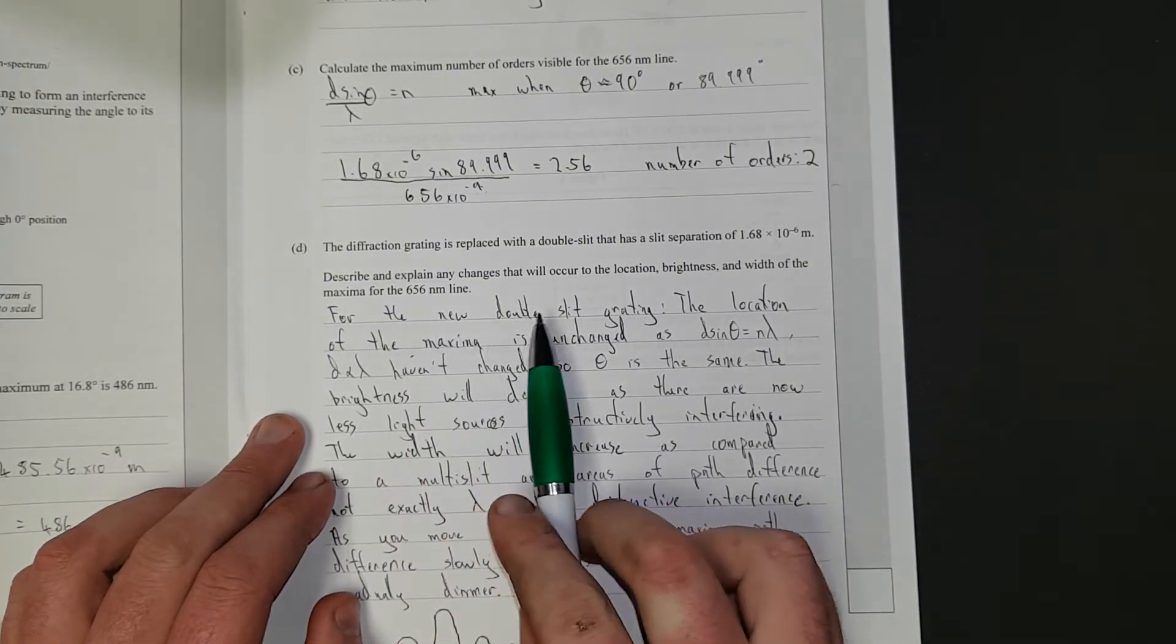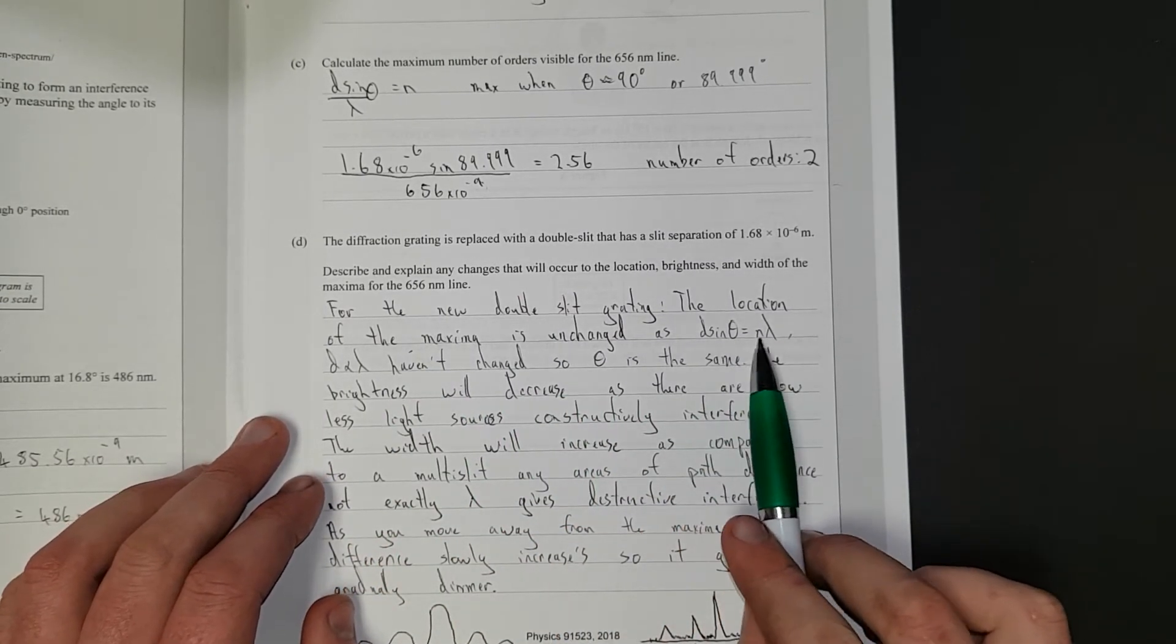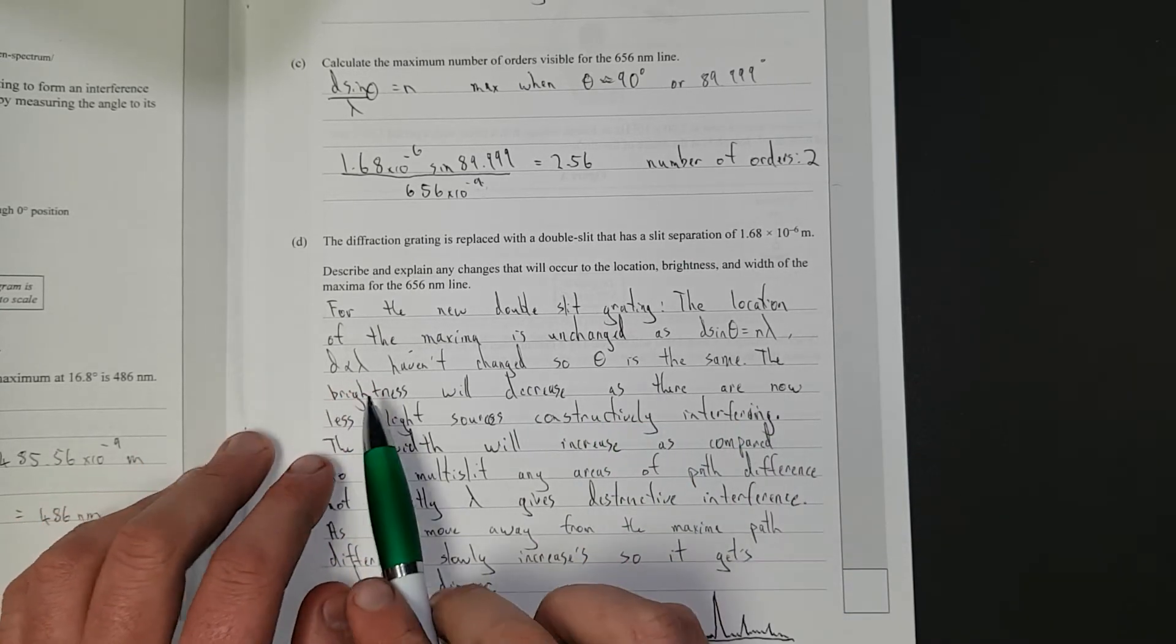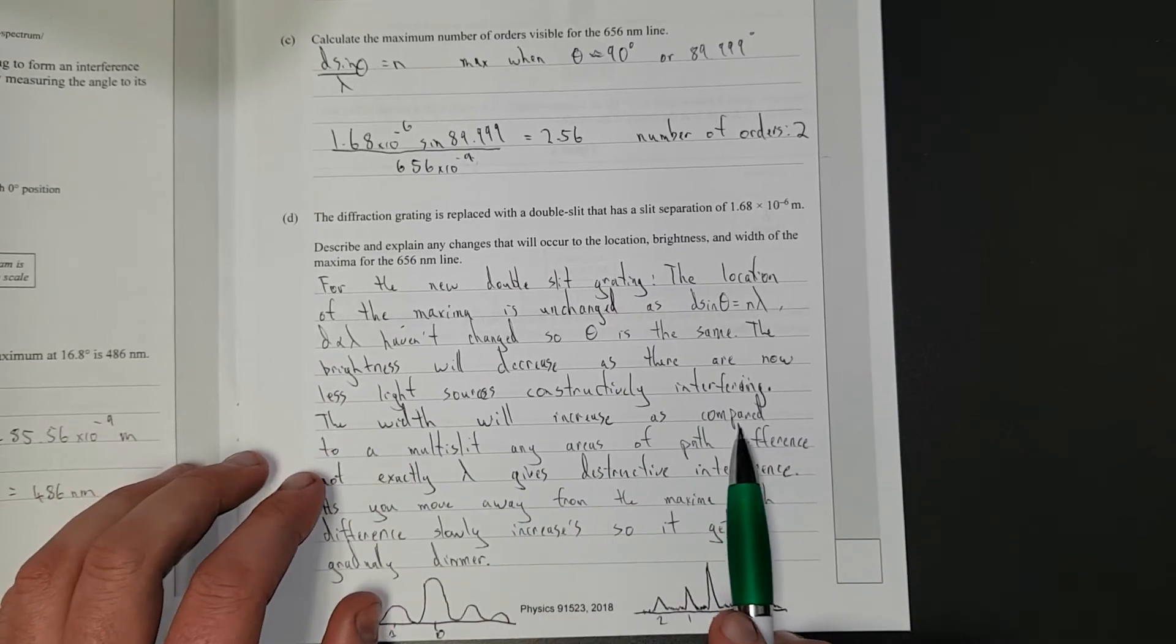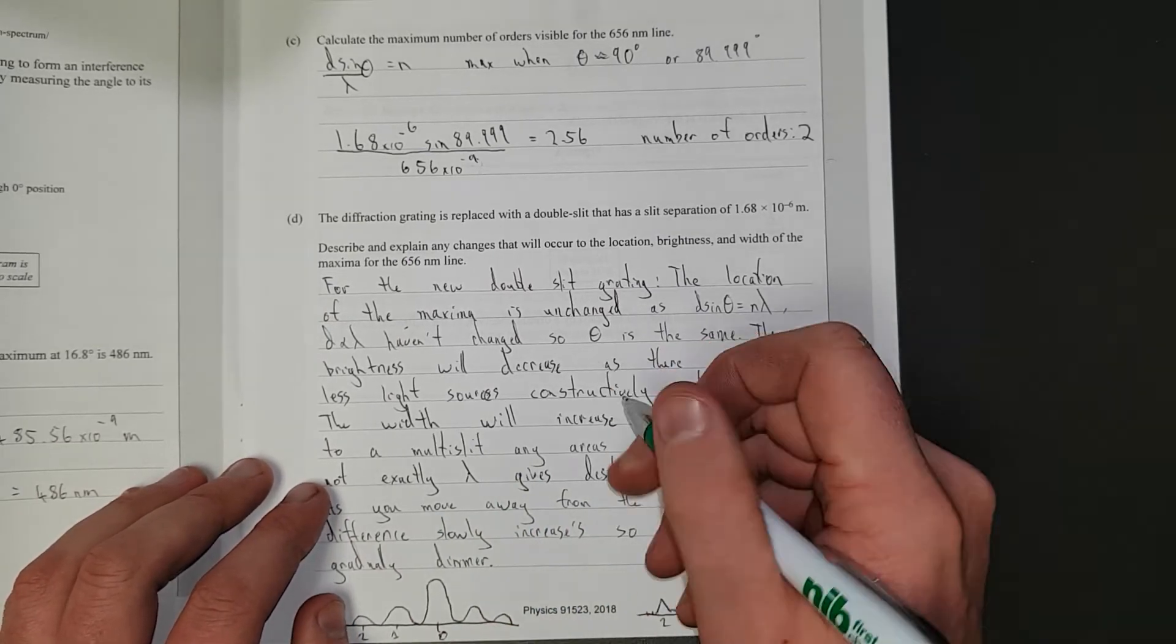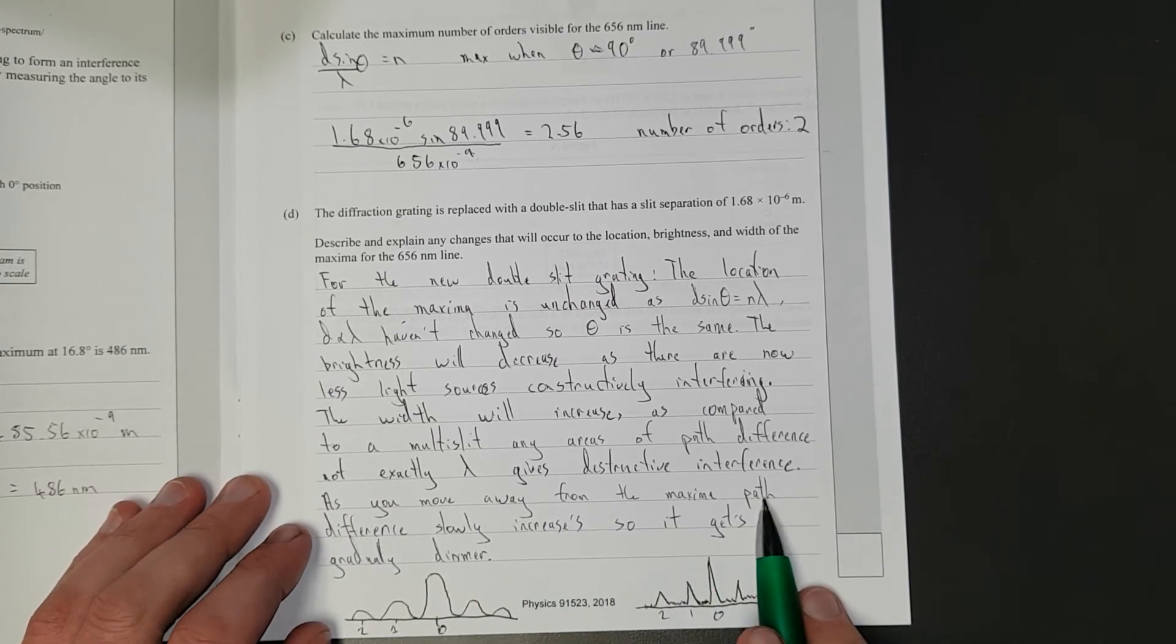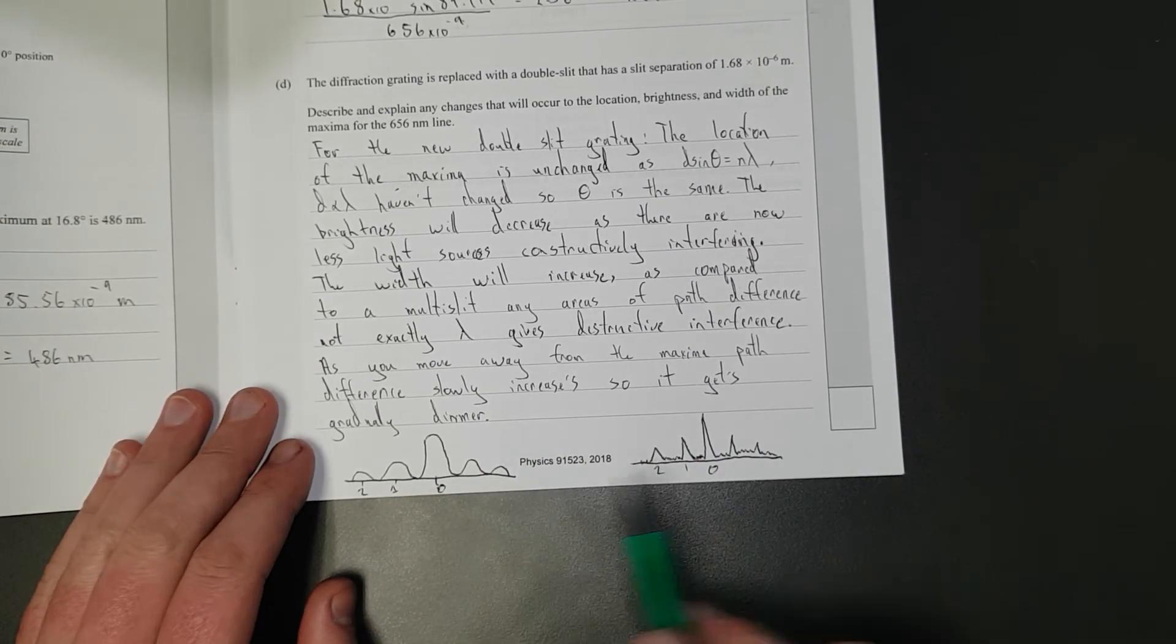So, I have said, for the new double slit grating, the location of the maxima is unchanged, as D equals sine theta N lambda, the slit separation and the wavelength haven't changed, so the angle is the same. The brightness will decrease as there are now less light sources constructively interfering. The width will increase as compared to a multi-slit, any areas of path difference not exactly like lambda or one wavelength, gives destructive interference. As you move away from the maxima, path difference slowly increases, so it gets gradually dimmer.